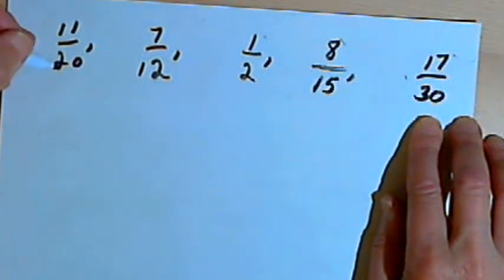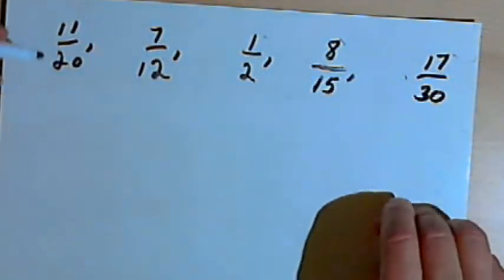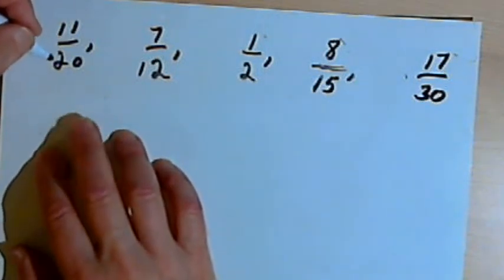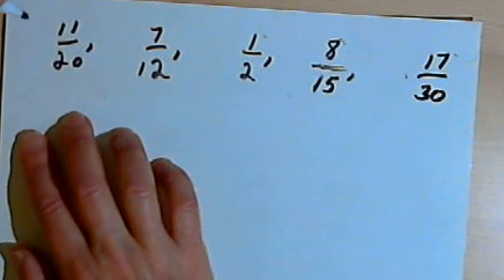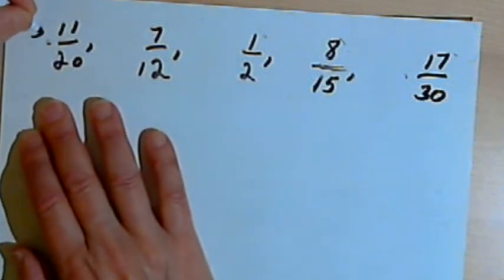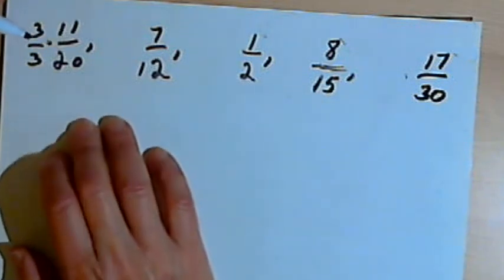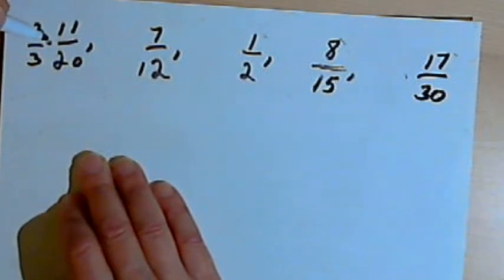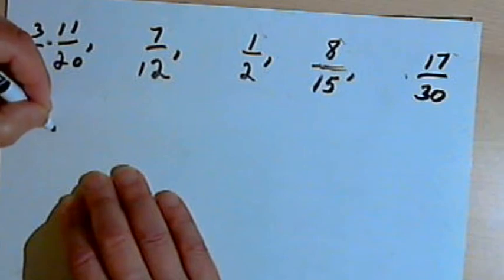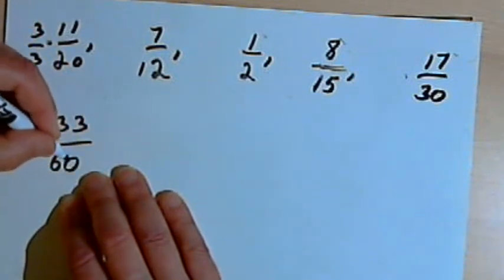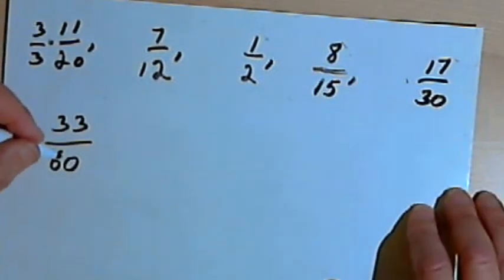So I'm going to have to turn the denominator for each one of these into 60. Let's start with 11 over 20. If I want to turn that 20 into a 60, I would have to multiply it by 3. So I'm going to multiply the whole fraction by 3 over 3, which is just 1. So I'm not really changing the fraction, I'm just changing what it looks like, I'm not changing its value. Okay, so 3 times 11 is 33, and 3 times 20 is 60. So my new fraction is 33 over 60.